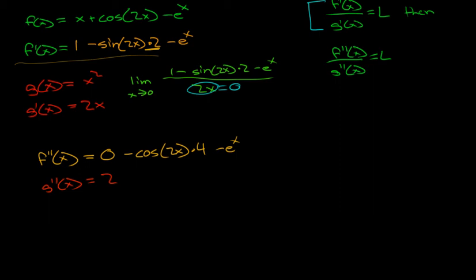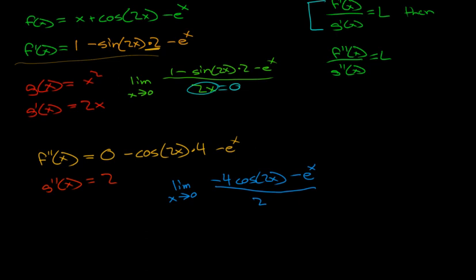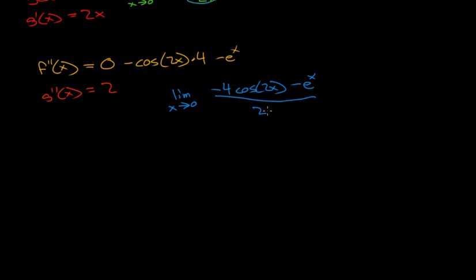What happens if we plug these values in? We'll get negative 4 cos(2x) minus e to the x over 2, as the limit of x approaches 0. Now we can plug in 0 because we're not dividing by 0, meaning we have a 2 here now. If we look at cos(2x), that's going to be evaluated at 2 times 0, so it's just going to be 0. Then cos(0) is 1.